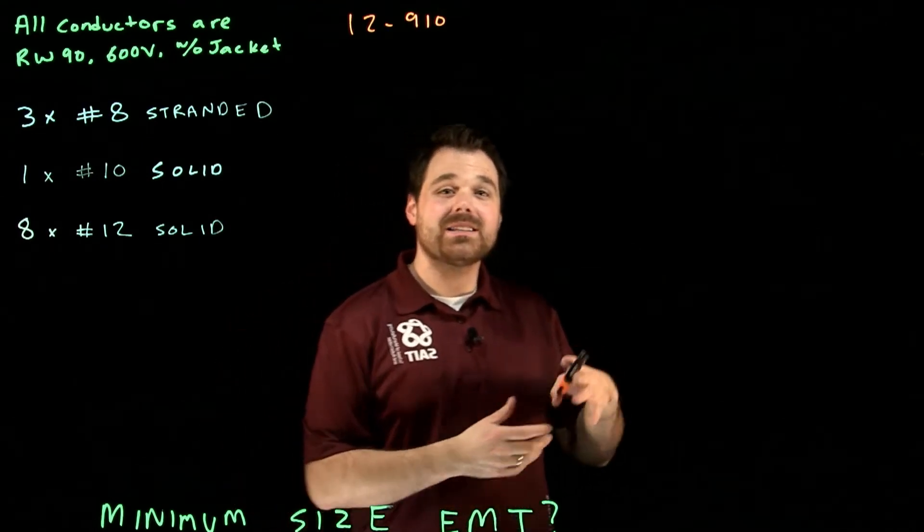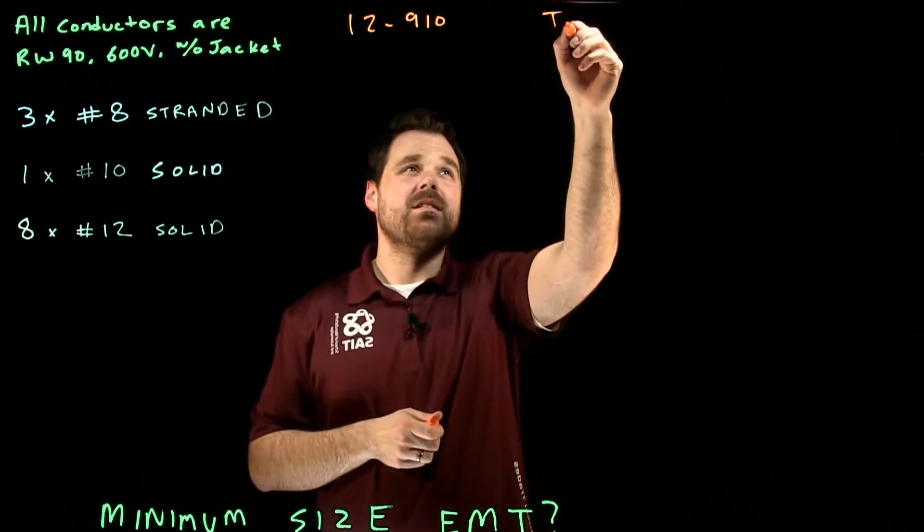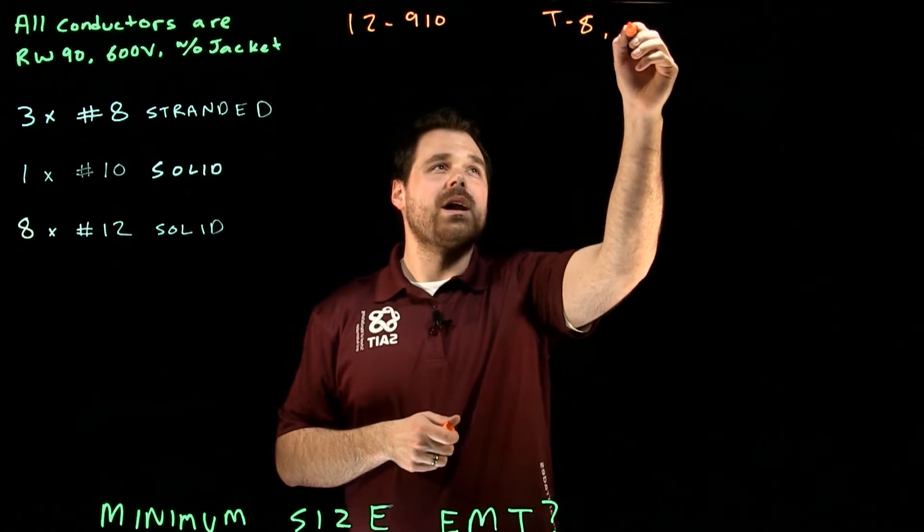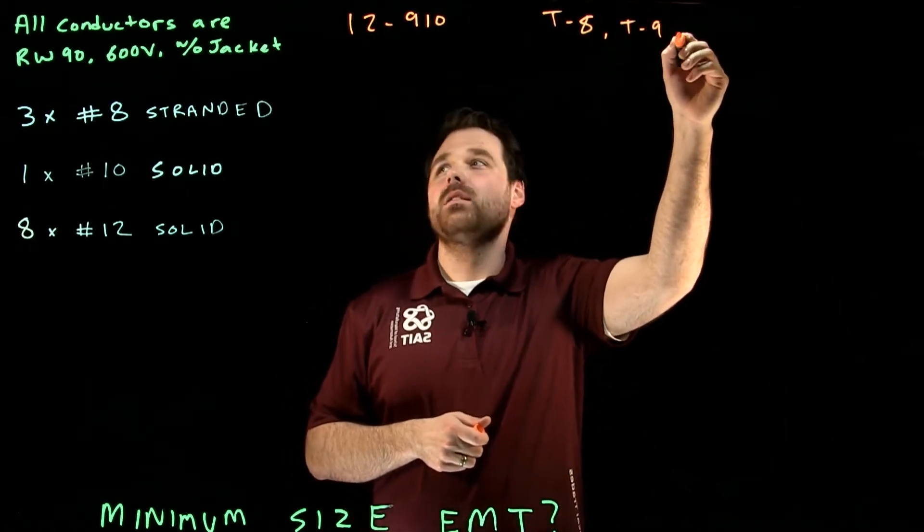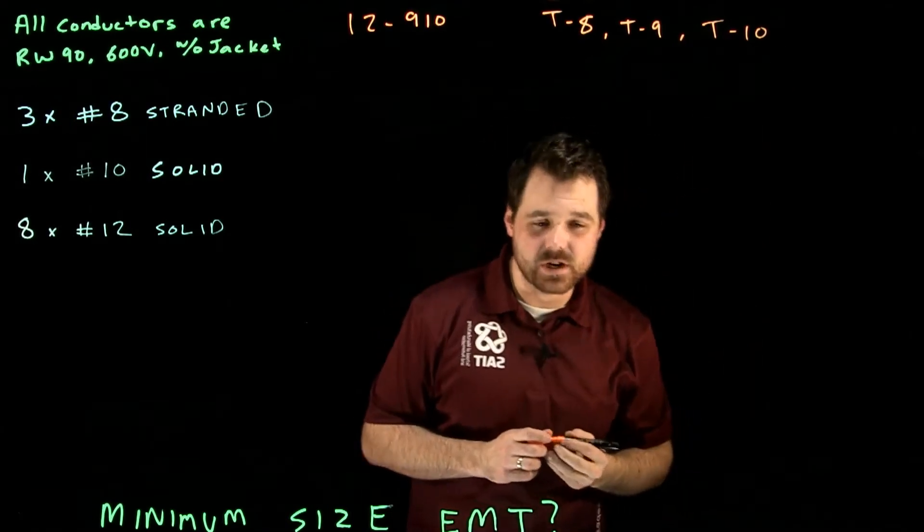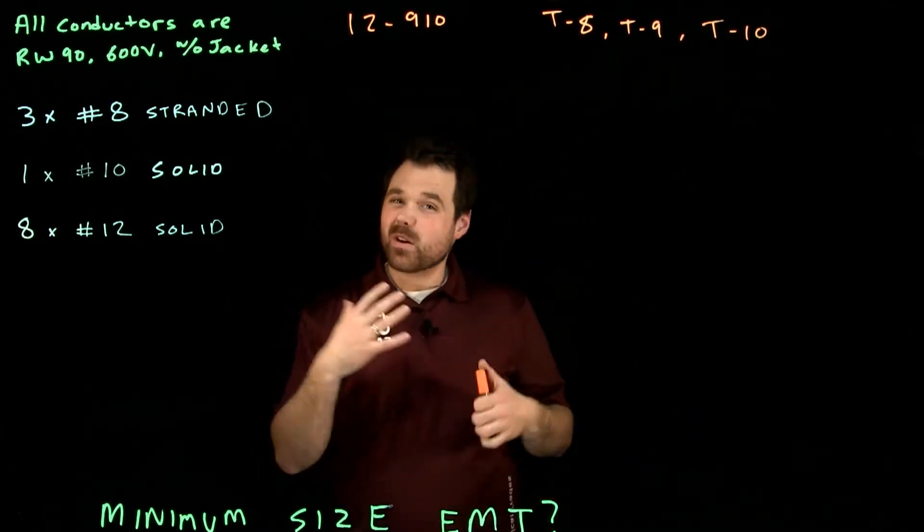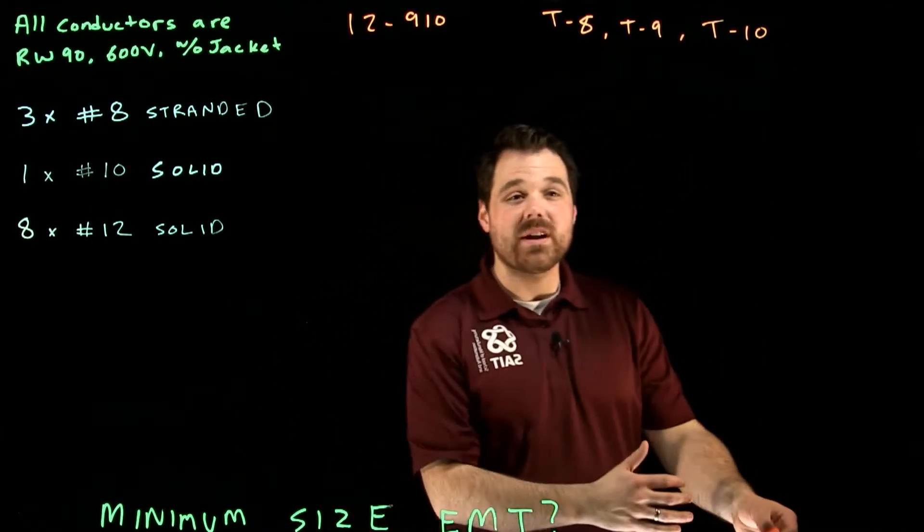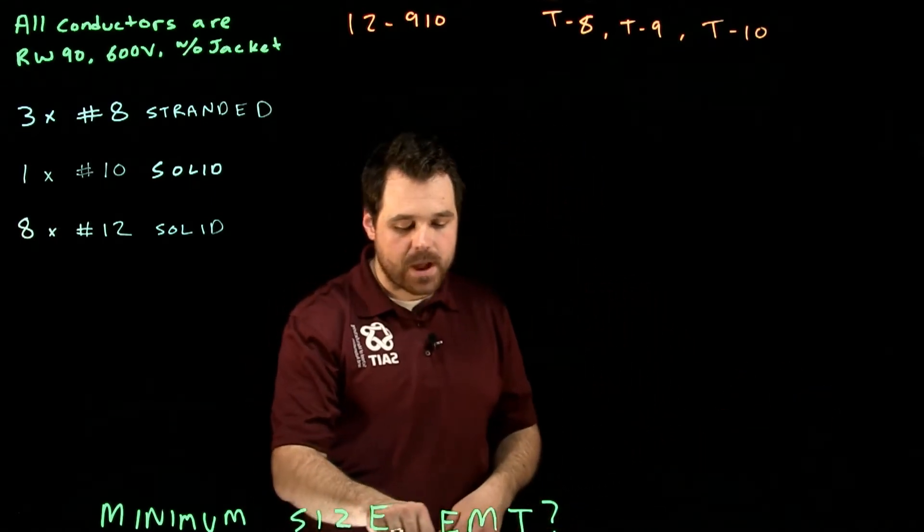We're going to have to use tables 8, 9, and table 10 to size these conductors. Keeping in mind, if they all were the same size conductor, we could just go right to table 6, A through K and size it based on that.